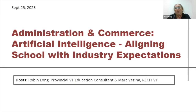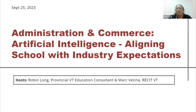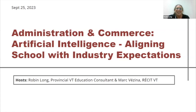Today we are dealing with Sector 1, which is administration, commerce, and computing support, and we're going to talk about artificial intelligence. We want to look at what I'm teaching and how that aligns with industry expectations, because artificial intelligence is moving a million miles an hour. How is that trade adapting? What should I be teaching, or should I be teaching it at all?